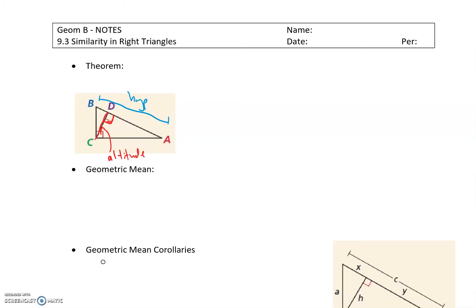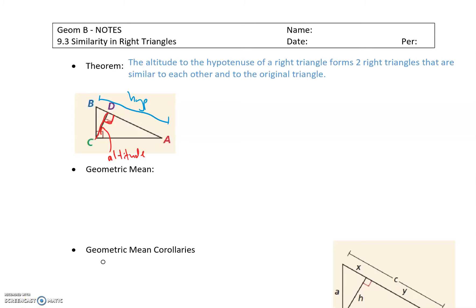So let me go ahead and write down the theorem. This theorem says that the altitude to the hypotenuse of a right triangle — specifically going from that right angle C to that hypotenuse AB, creating a right angle at angle ADC — forms two right triangles that are similar to each other and also similar to the original triangle. It creates three similar shapes.